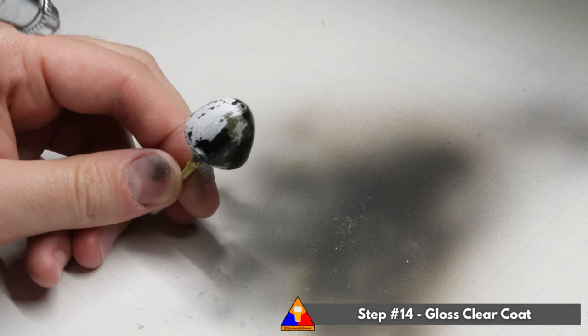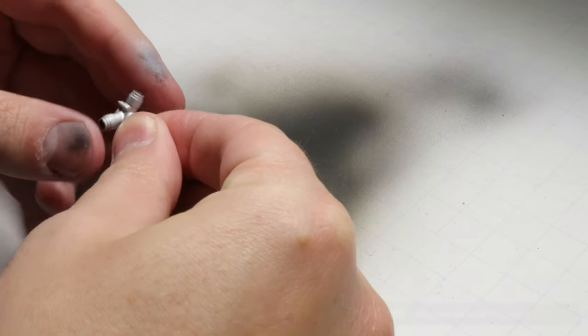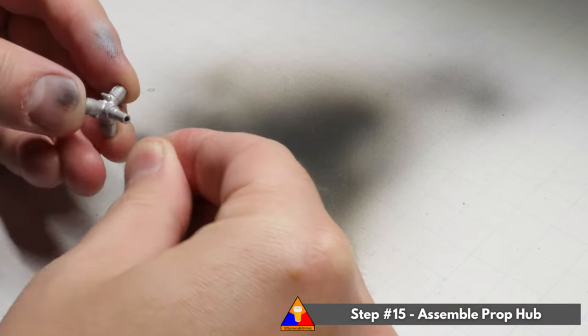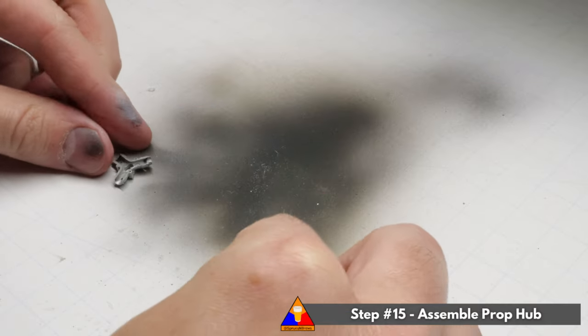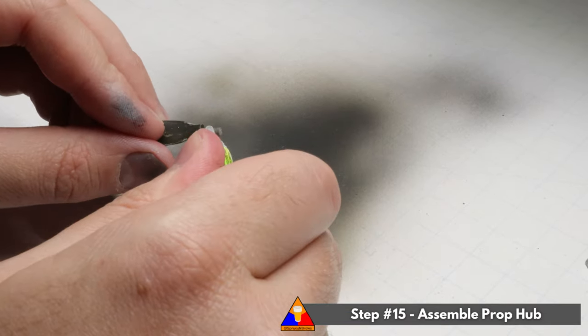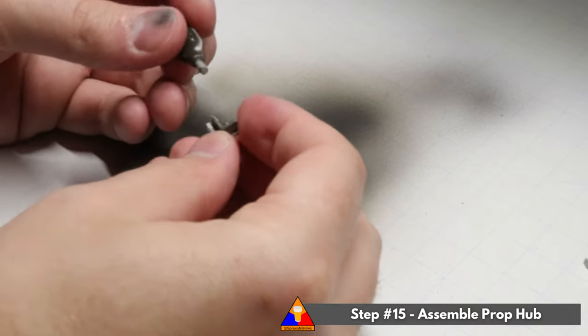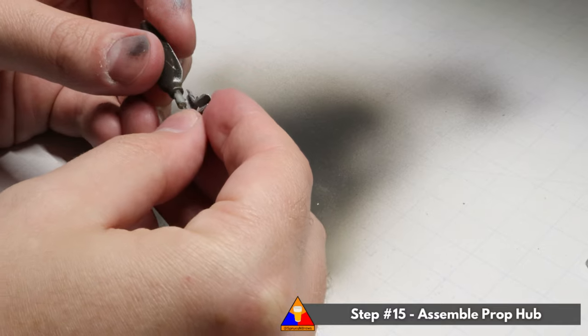We're going to spray yet another coat of gloss varnish to seal in that layer of chipping, and then we're going to assemble our prop hub. At this phase, we can break the PVA glue bond on our prop hub. Remember that piece? We haven't touched it since the first gloss varnish layer. And we're just going to super glue our individual props into place and reattach both sides of the prop hub.